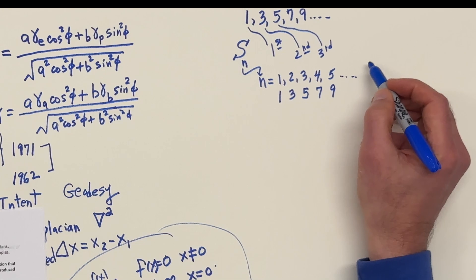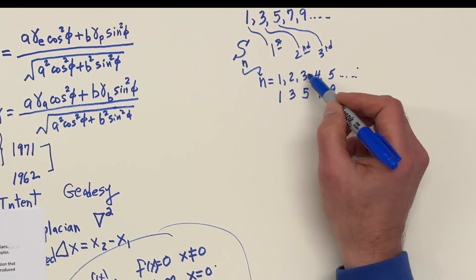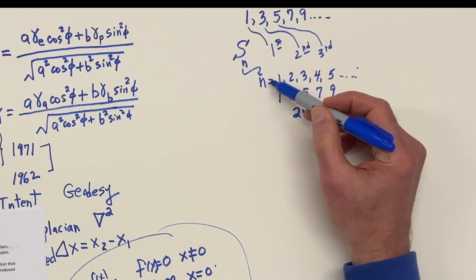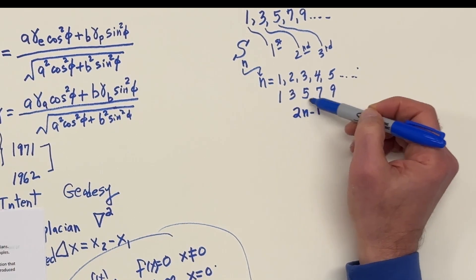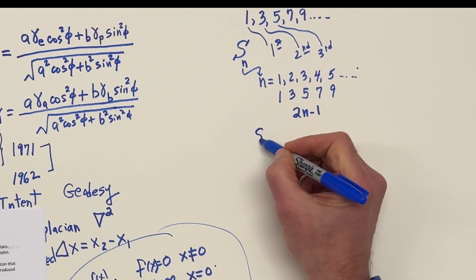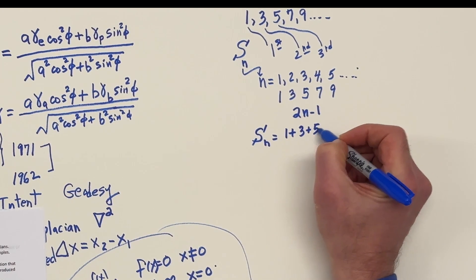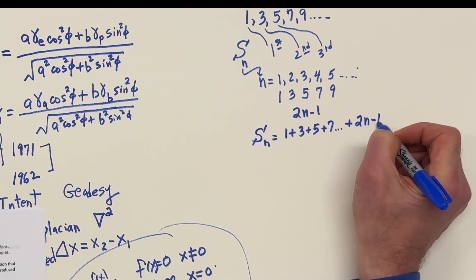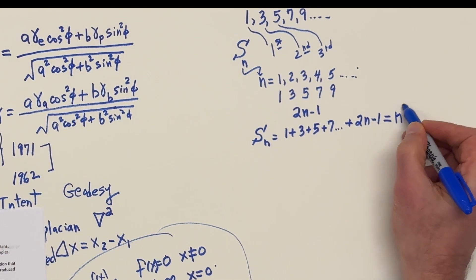So the sum of n odd integers is 1 + 3 + 5 + 7 + ... + (2n − 1). And I want to prove that this equals n squared.